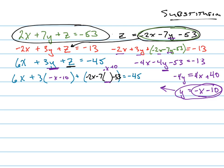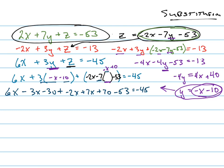I'm distributing in here: negative three x minus thirty, plus negative two x. Distribute that negative seven times the negative x — that's a positive seven x. Negative seven times negative ten is a positive seventy. Minus fifty-three equals negative forty-five. So that's three x minus two x is one x, plus seven x is eight x. I've got eight x, and combining constants gives me negative thirteen.